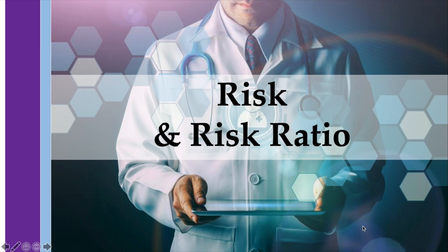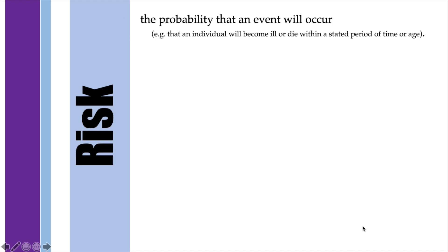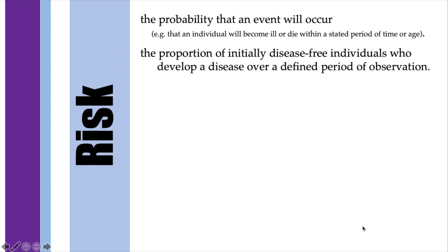This video is about two common measures of association used in epidemiology: risk and risk ratio. Risk is the probability that an event will occur. It may be that an individual will become ill or die within a stated period of time or age, or it's the proportion of initially disease-free individuals who develop a disease over a defined period of observation.